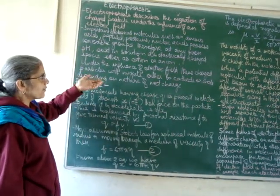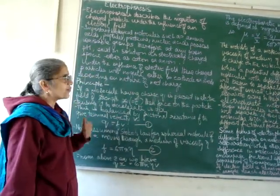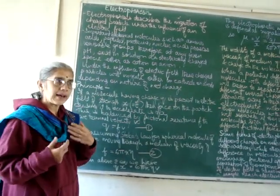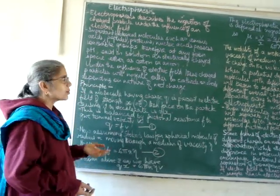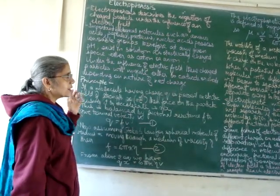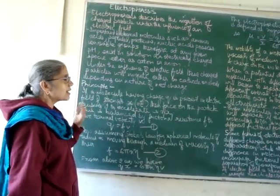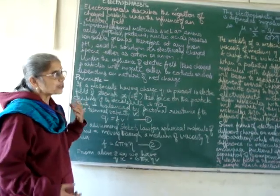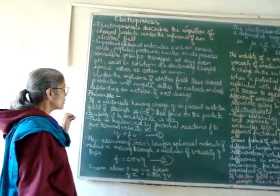Under the influence of an electric field, these charged particles will migrate either to the cathode or to the anode depending on the net charge present on that molecule.